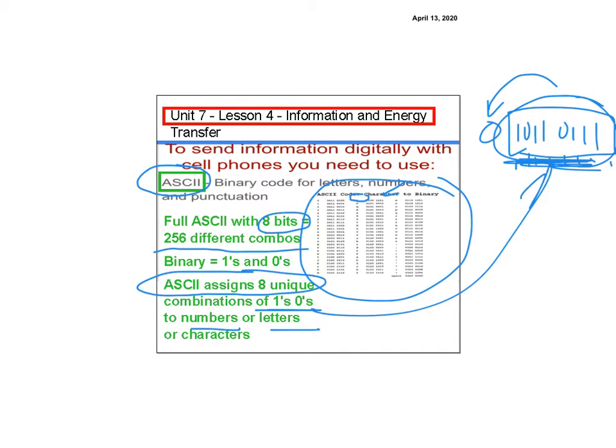But we send the information via ones and zeros. So that's kind of what we need to understand. And then we have to see how we can convert it from ones and zeros back into something we as humans can understand.